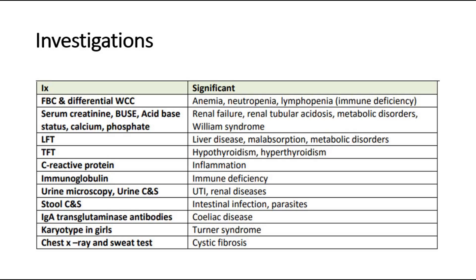For investigations: full blood count and differential count, renal profile and electrolytes to look for renal conditions or metabolic disorders, liver and thyroid function tests, CRP to look for inflammation or infection, immunoglobulin, urine tests, stool cultures to rule out parasite infections, IgA antibodies for celiac disease, karyotyping for Turner syndrome, and chest X-ray and sweat test to rule out cystic fibrosis.